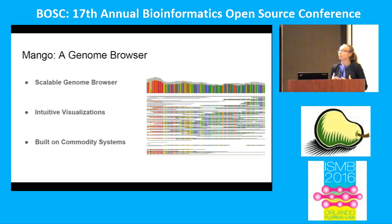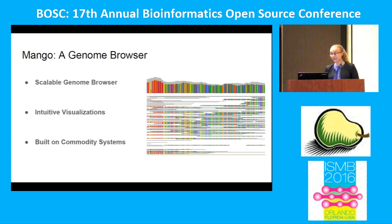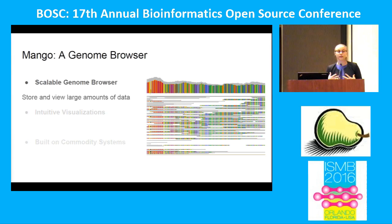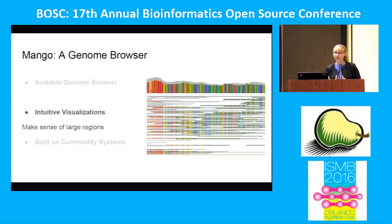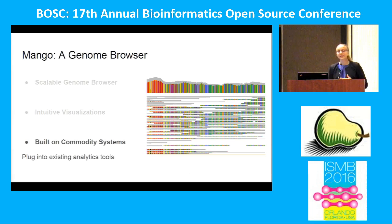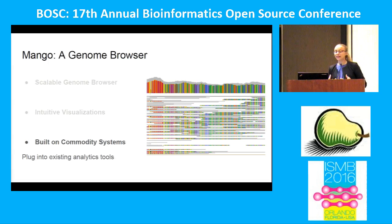At UC Berkeley we're working on a tool called Mango, a distributed genome browser. Mango tries to hit on three key factors supporting large-scale genome visualization. First, it's a scalable genome browser — we want to store and view large amounts of data in one single location and boot up a browser without pre-processing. Second, we'd like intuitive visualizations to make sense of larger regions. And lastly, we'd like to build this on commodity systems, plugging into existing open-source analytics tools.